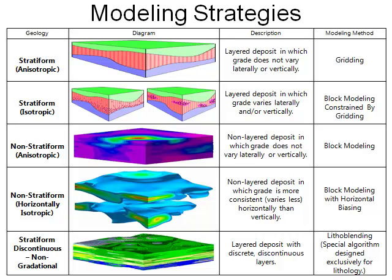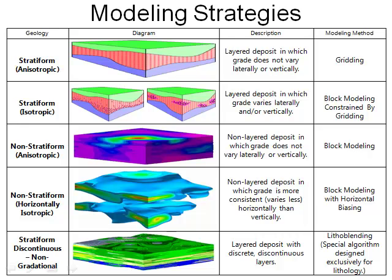Here's a chart that provides some modeling guidelines based on the vertical variability of the geologic, geophysical, geochemical, or geotechnical property being evaluated. The term grade is used to describe these properties in honor of the miners who originally came up with the concept of block modeling. If you're just modeling gross stratigraphy, use two-dimensional gridding. If you're modeling a vertically variable parameter sandwiched between two homogeneous stratigraphic units, use 3D block modeling constrained by overlying and underlying 2D grid models. If the parameter is not sandwiched between anything, use 3D block isotropic modeling. If it is horizontally biased, use a 3D block modeling algorithm that favors horizontality. Finally, if you're dealing with quasi-layer deposits that abruptly change laterally, you may need a special algorithm called lithoblending.